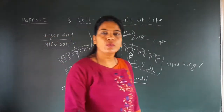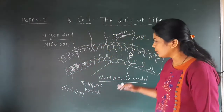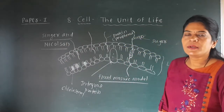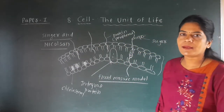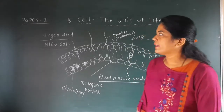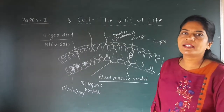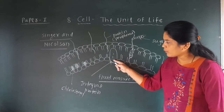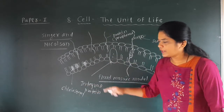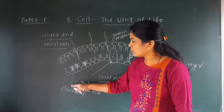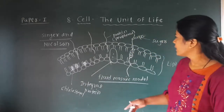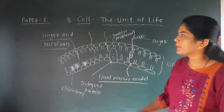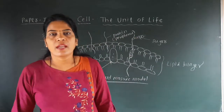For the exam, you do not need to draw the diagram, but you should know it is the fluid mosaic model given by Singer and Nicholson. If a question is asked about the diagram, you have to identify the correct labels: which is a peripheral protein, which is an integral protein. Cholesterol is also present in the lipid bilayer. Carbohydrate in the form of sugar is also present in the fluid mosaic model.